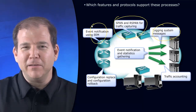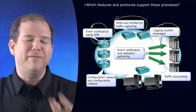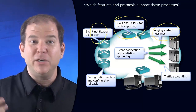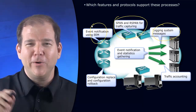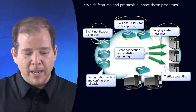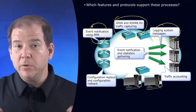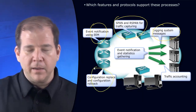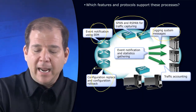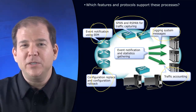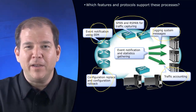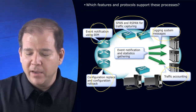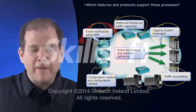EEM is like a series of if-then statements. We can say, if this event occurs on the network, then we want to respond by doing this. We're going to give you a couple of examples in this discussion. We could also use tools to help us roll back and go back to a previous configuration. And NetFlow is a great tool for traffic accounting to see exactly what kind of traffic we have coursing through our network right now.